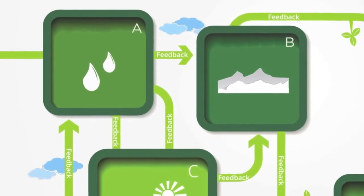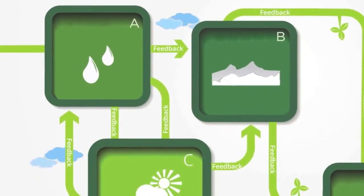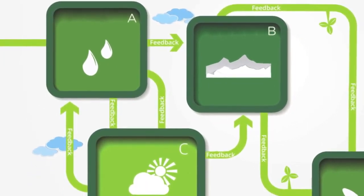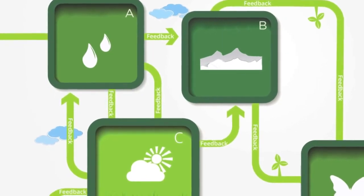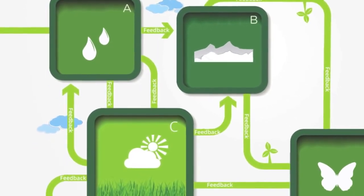For an ecosystem to develop over time requires a relatively stable balance between its constituent elements. This balance is typically regulated through what are called feedback loops.